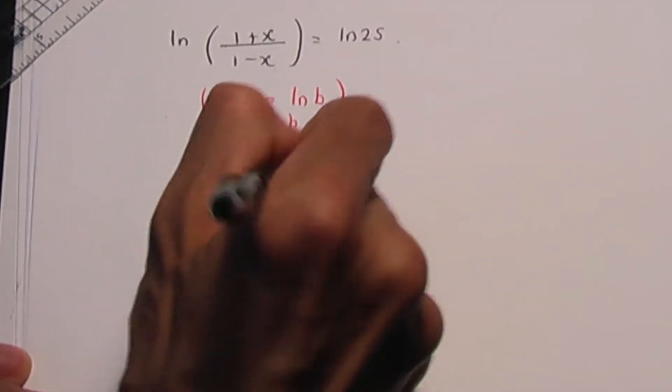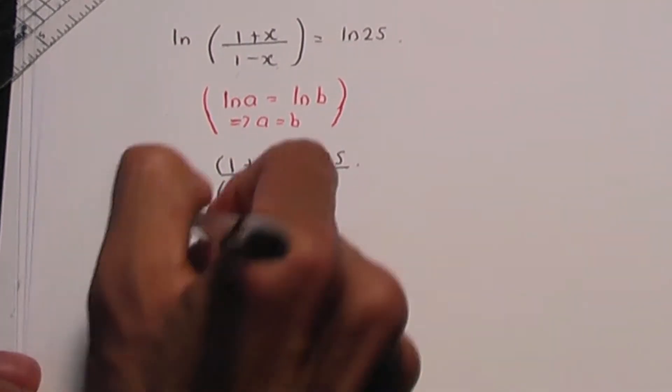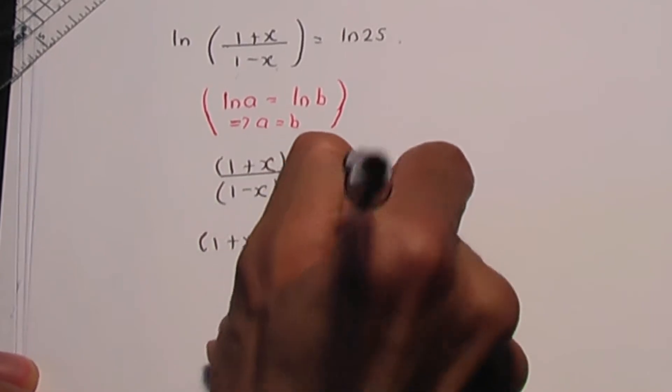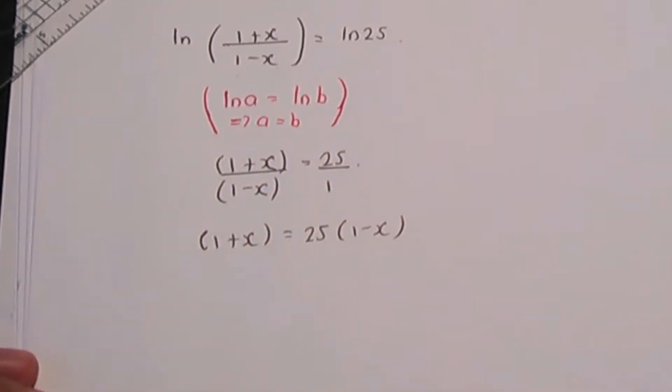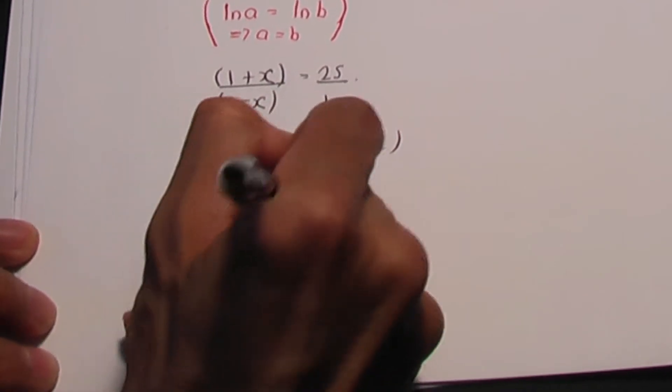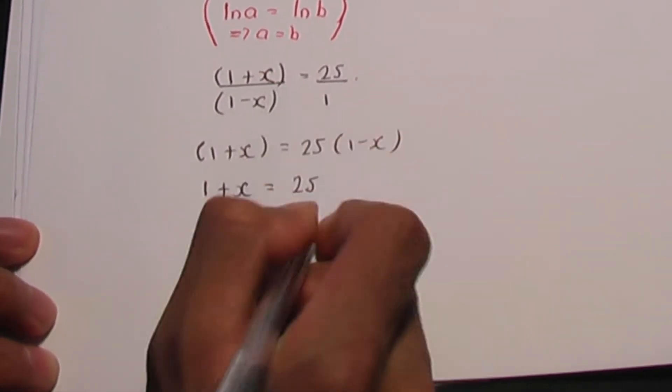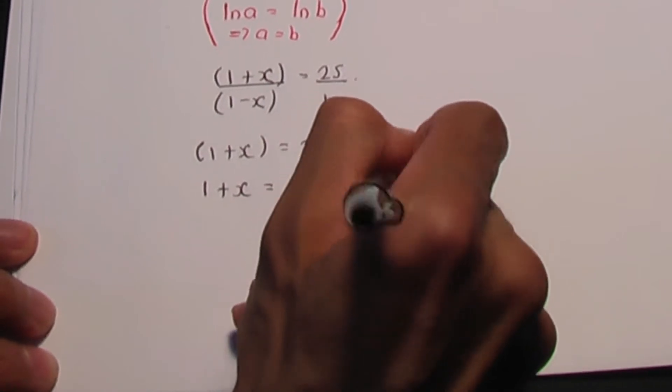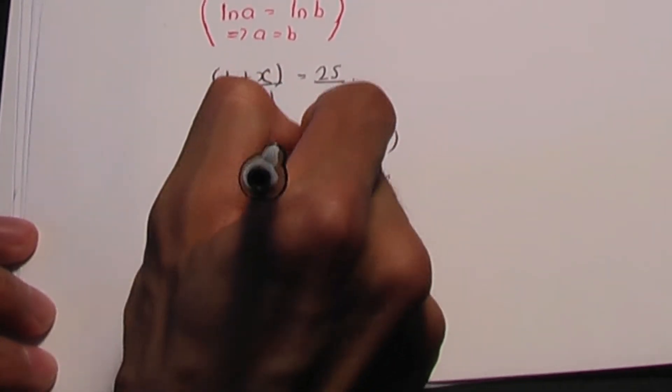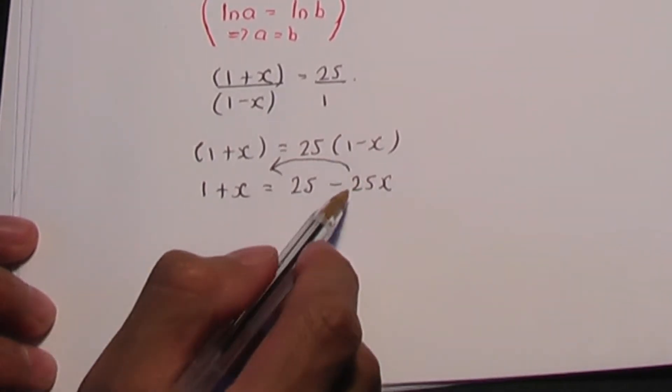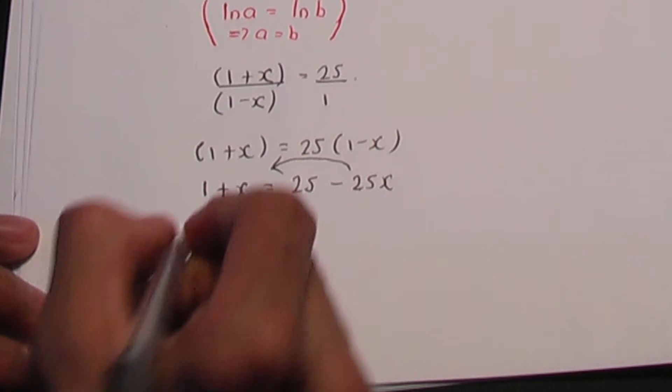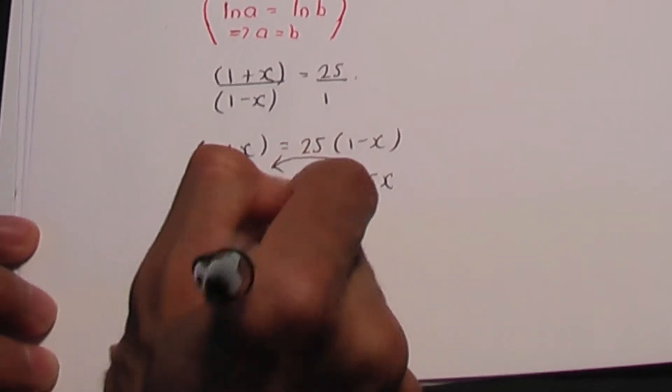So if I cross-multiply, 1 plus x equals 25 times 1 minus x. And if I expand, 1 plus x equals 25 minus 25x. If I move my x terms to one side, so if I take my x terms to the left, x plus 25x is 26x.